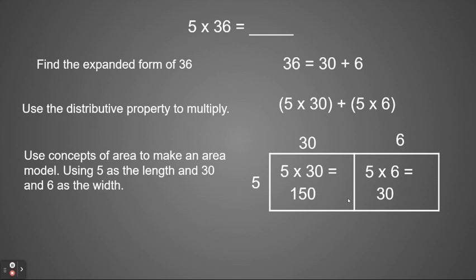So if you look back at the distributive property, we take both of those two products and add them together. So now we're going to take the products in our area model and add them together. So 150 plus 30 equals 180. And therefore 5 times 36 equals 180. That's basically what you would be using to use the distributive property and an area model to multiply.